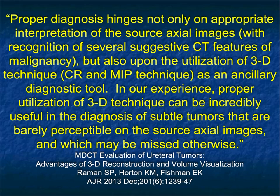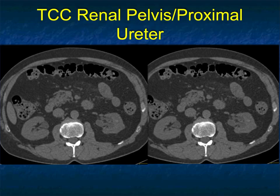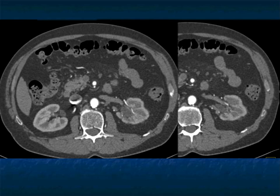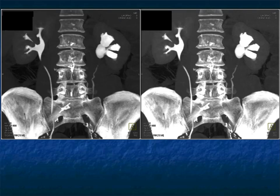3D can be very helpful. In our kidney talk, I speak a lot about looking at the calyces — subtle calyceal lesions are easy to walk by. In the ureter, the role of 3D includes: accentuation of subtle strictures and sites of narrowing, accentuating subtle abnormal urothelial enhancement and thickening, better visualization of the distal ureter, and better visualization of flat polypoid lesions. Here's a good example: there's caliectasis in the left kidney. With contrast, the left kidney does not enhance as well as the right. On excretory phase imaging, the calyces are dilated, and the proximal pelvis is thickened — that's not peristalsis like on the right; that's a stricture, a TCC with caliectasis.